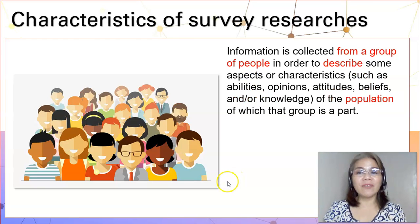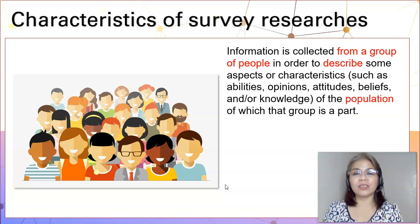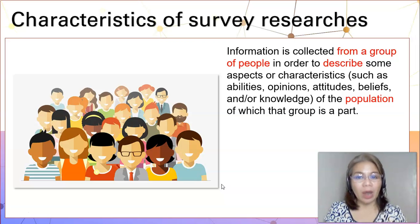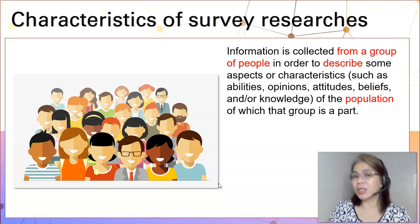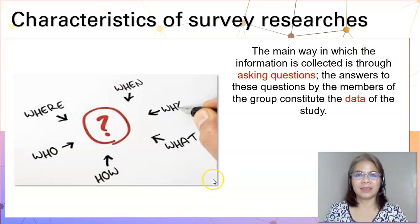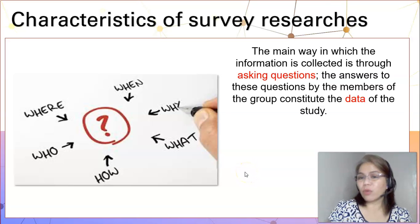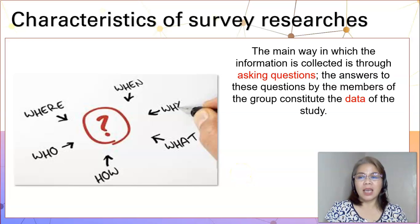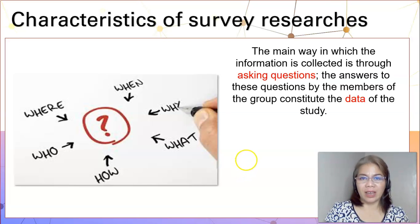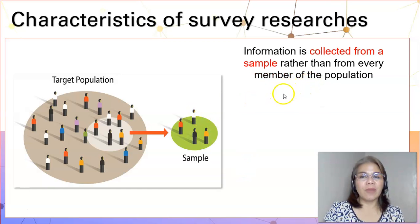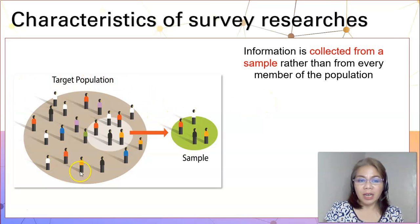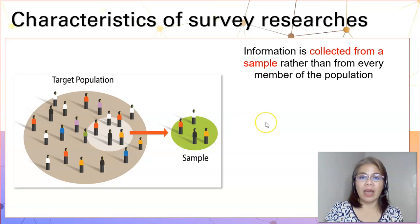One of the characteristics of a survey research is that information is collected from a group of people in order to describe some aspects or characteristics of the population of which that group is part. The next characteristic is that the main way in which the information is collected is by asking questions. The answers to these questions from the sample of the study constitute the data of the survey. Another characteristic is that the information is collected from a sample rather than from every member of the population — meaning that from our target population, we choose randomly a sample and collect data from that identified sample.